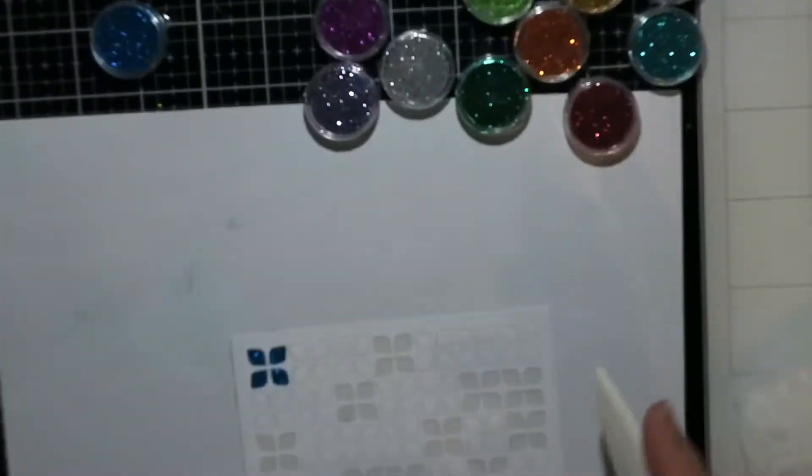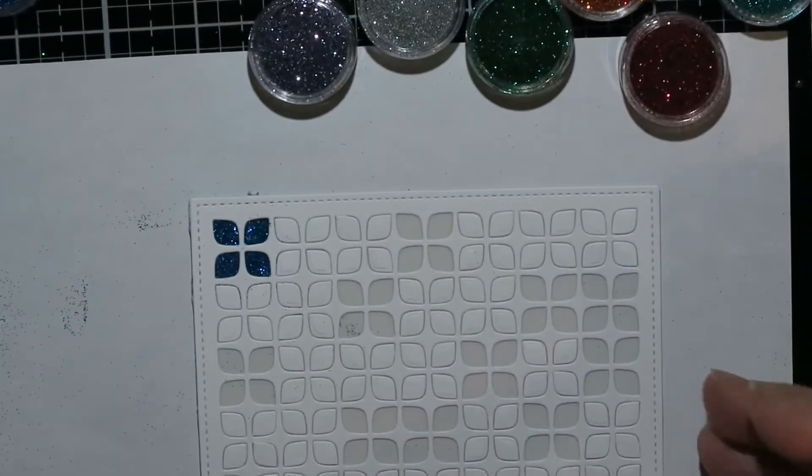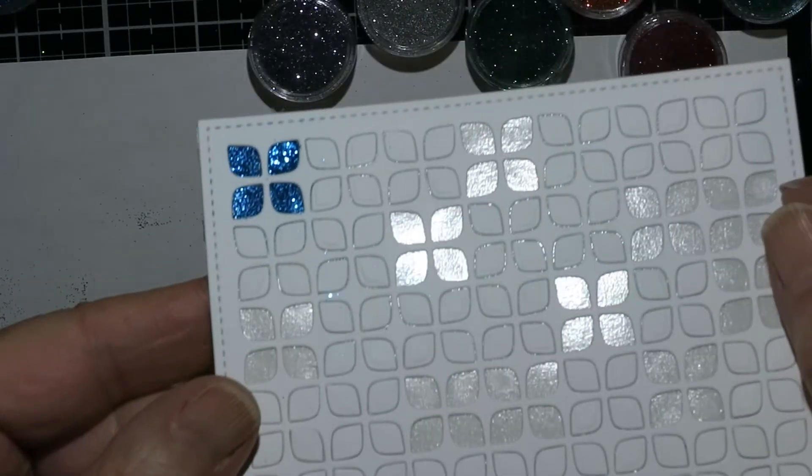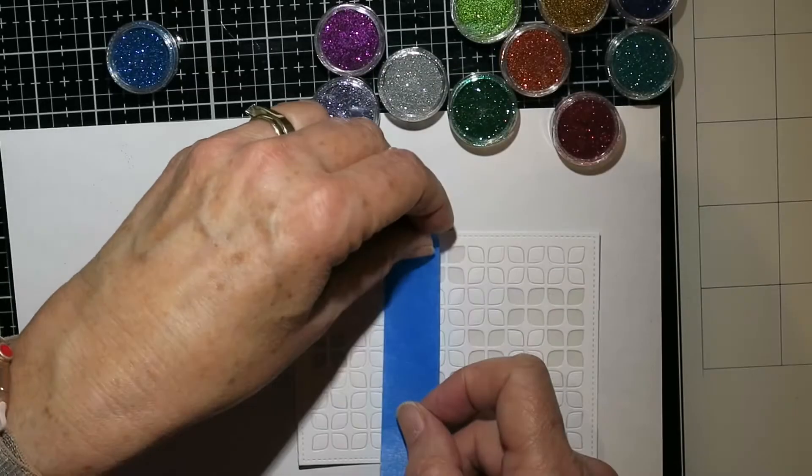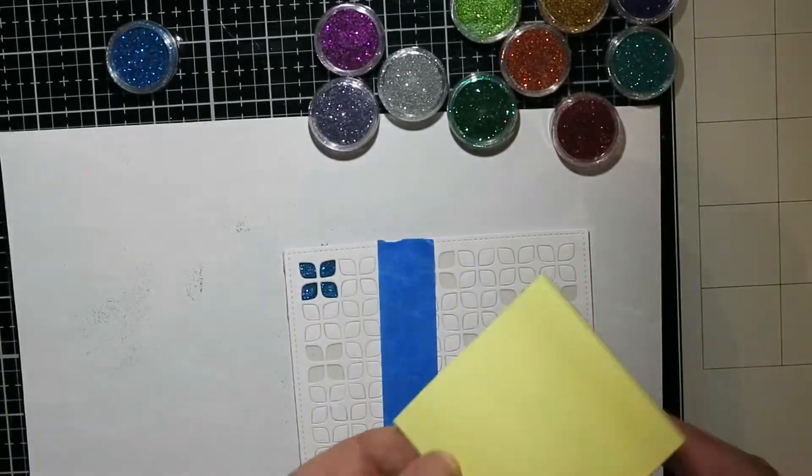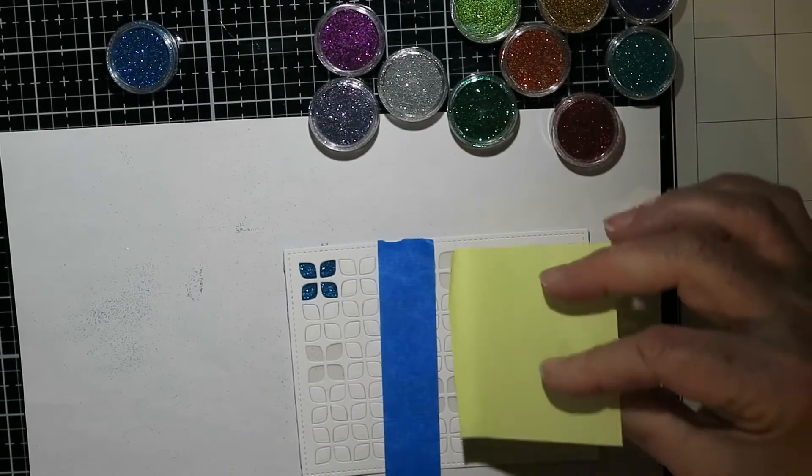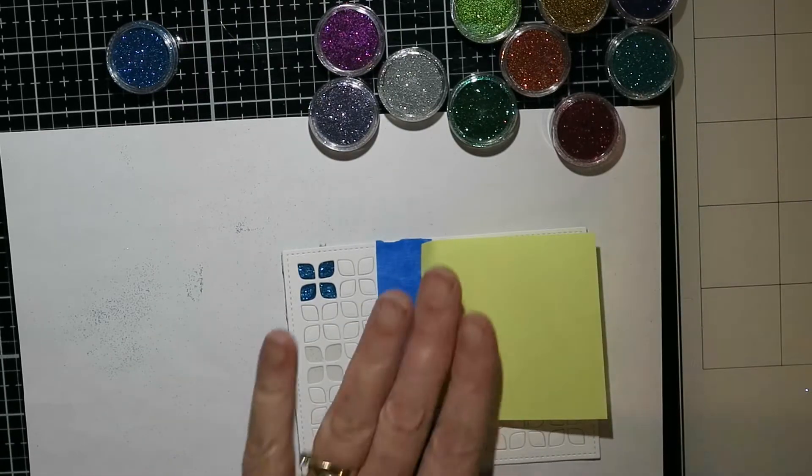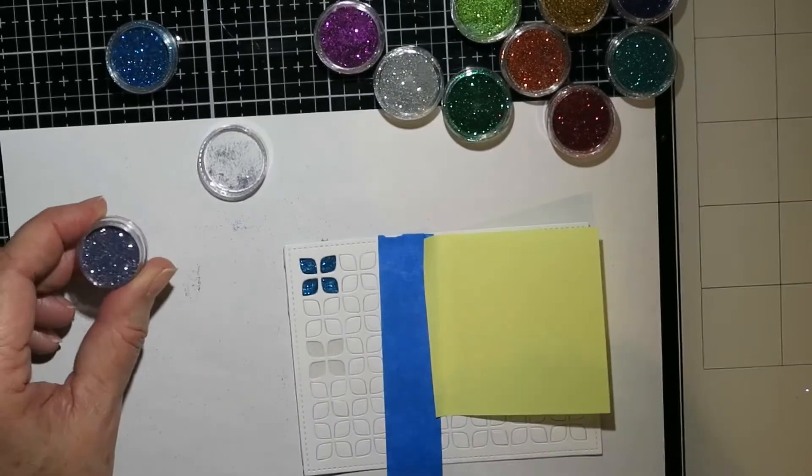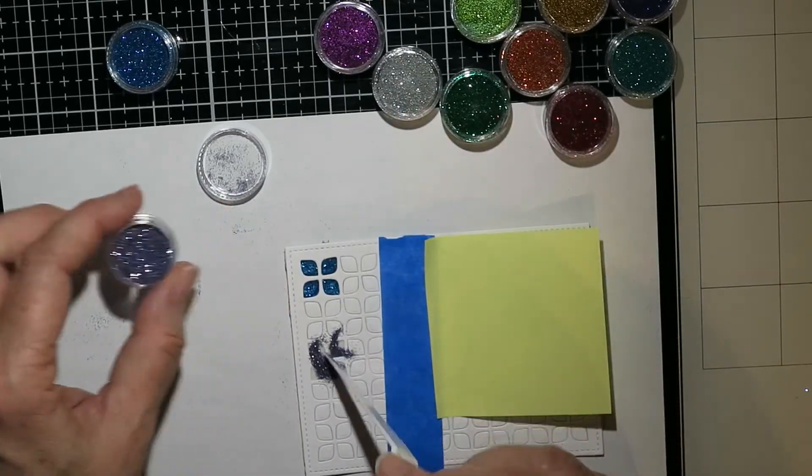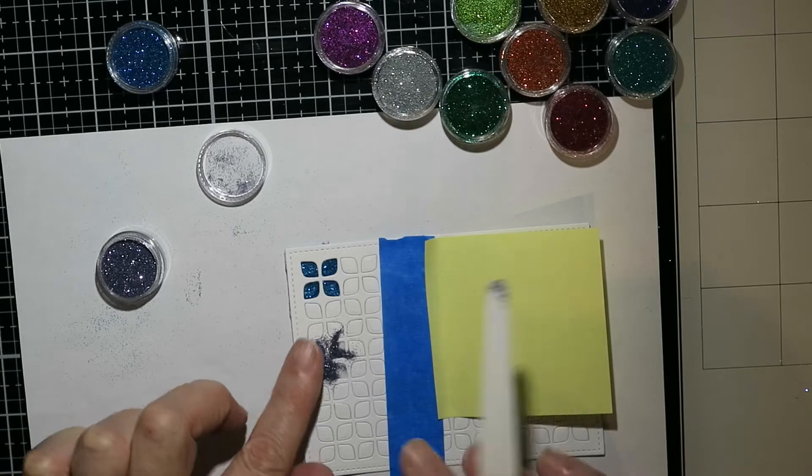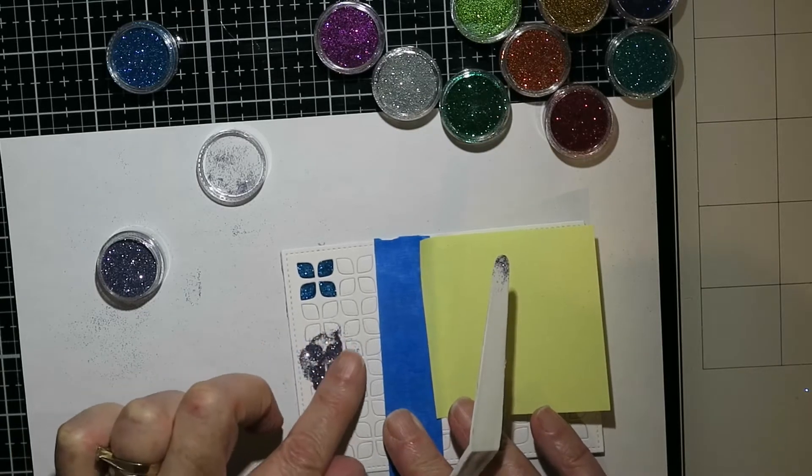I'm just using my bone folder to press in that first petal. When it is pressed down to the backing adhesive it kind of goes a slightly different shade. It's a bit shinier quite honestly, so I kind of know that that's when it's really sealed and adhered to the backing.